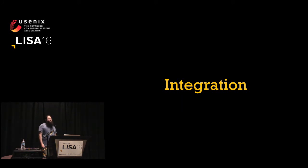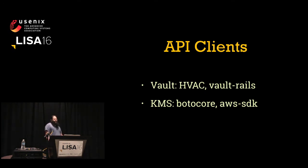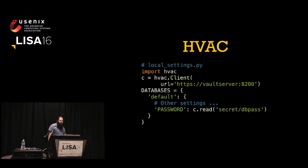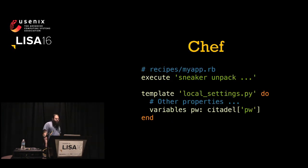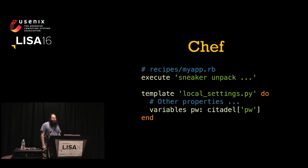Let's talk about how to integrate these tools into your existing toolkits. For things like HashCorp Vault, there are API client libraries — HVAC and vault-rails in Python and Ruby, respectively. For KMS, there's Boto Core and AWS SDK. For example, you can have Django talk directly to Vault to get its database password. For things you don't control, like NGINX, you can integrate through your config management layer — call command line tools like Sneaker, or use my Citadel library for private S3 buckets directly in your Chef code.